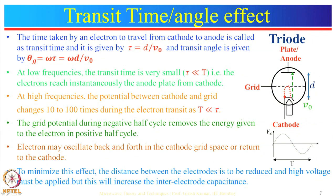The next limitation is transit time effect. The transit time of an electron is the time taken to travel from cathode to anode. For a triode with cathode-to-anode distance d and average electron velocity v₀, the transit time is τ = d/v₀, and the transit angle is θg = ωτ = ωd/v₀. The input voltage applied to the device has a time period T.